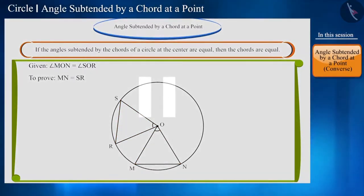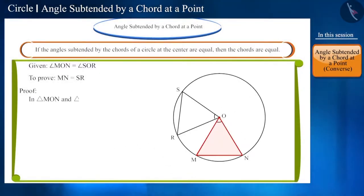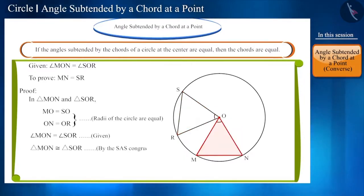Why don't you pause the video and try to prove it? In triangle MON and triangle SOR, a pair of two sides are equal because they are the radii of the circle and the corresponding angles between these sides are also equal. Therefore, both triangle MON and triangle SOR are congruent according to the SAS congruence rule.